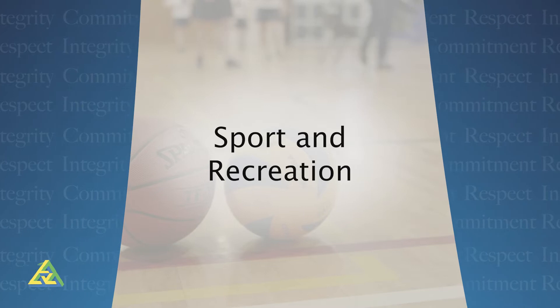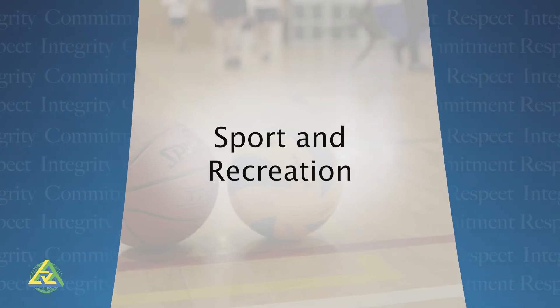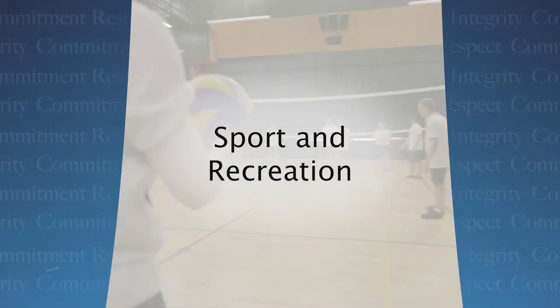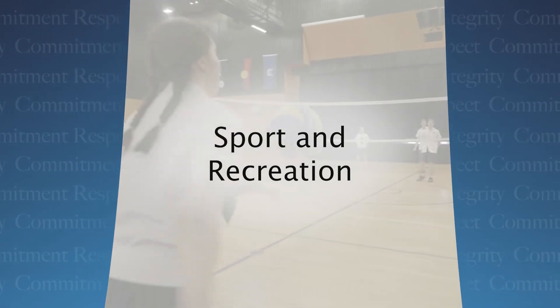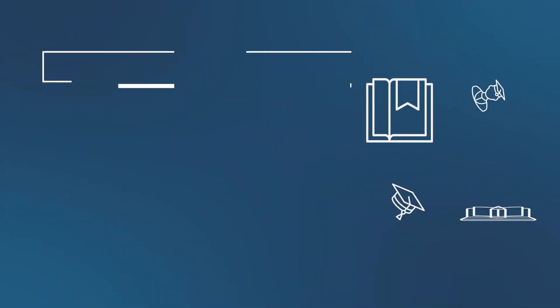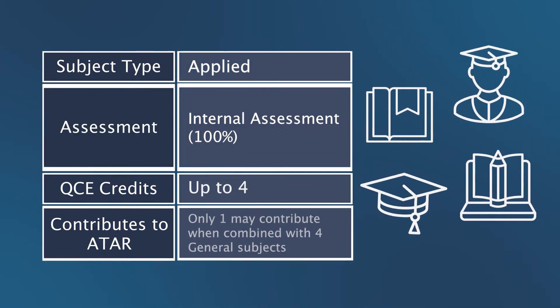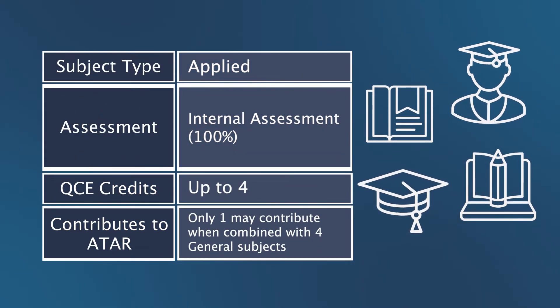Sport and Recreation provides students with opportunities to learn in, through and about sport and active recreation activities, examining their role in the lives of individuals and communities. Sport and Recreation is an applied subject, consisting of four units completed over Year 11 and 12. Successful completion of all units provides up to four core credits towards a student's QCE. Sport and Recreation will only contribute to a student's ATAR calculation if they are studying four general subjects.